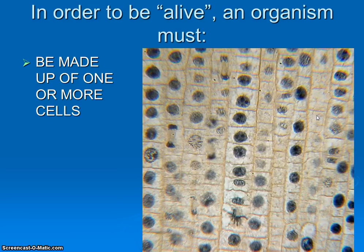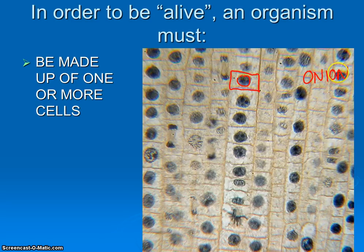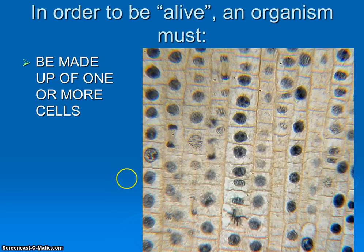This image is actually something we're going to be looking at later on this year — individual cells. Each box, if you will, is a cell. We can see the singular nucleus in each cell. Each one looks a little different because they're in the process of reproducing. This is actually from an onion root. Notice that not all cells have to be the same size or the same shape — we're going to see a lot of diversity in life.